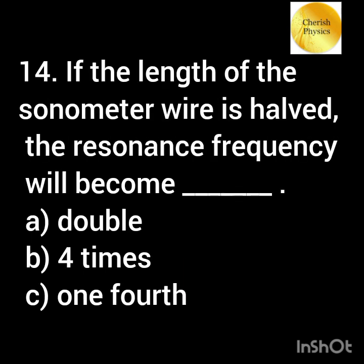If the length of the sonometer wire is halved, the resonance frequency will become: Option A: double. Option B: four times. Option C: one fourth.